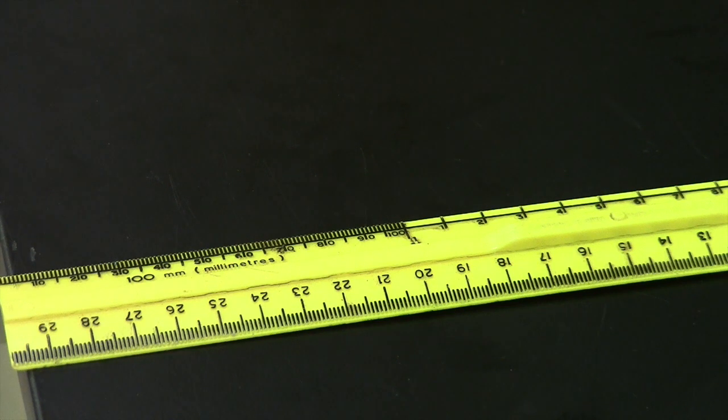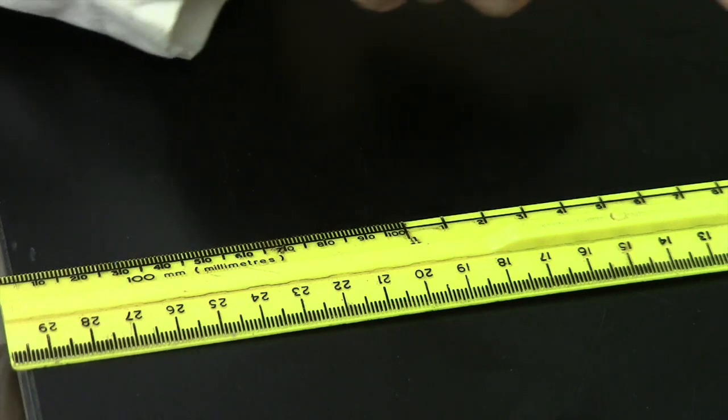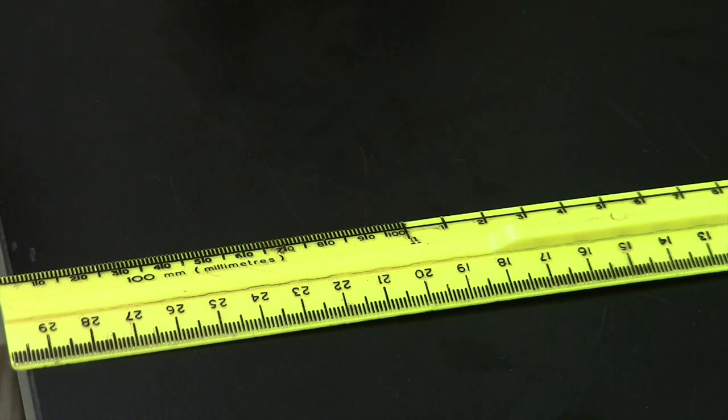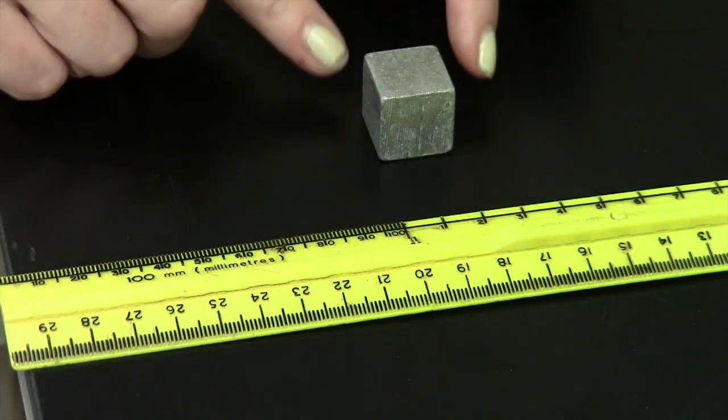Alright, so we're going to take a look at how to measure length of an object. Here we have a ruler with several precision scales on it, all with the unit meter and a different prefix, and we have an object we're going to measure the length of. So using this scale here,